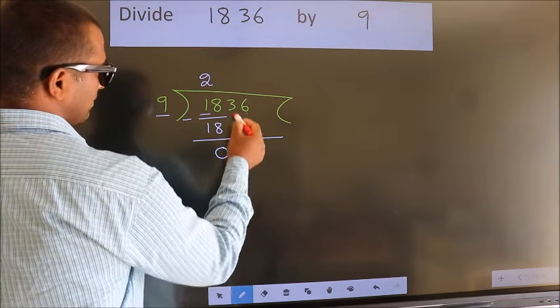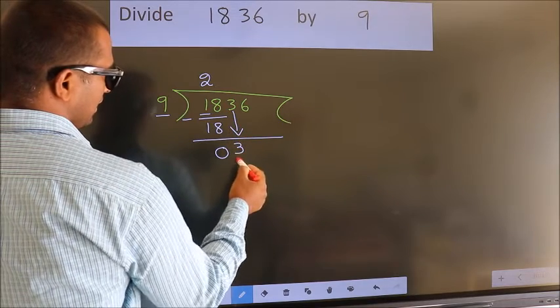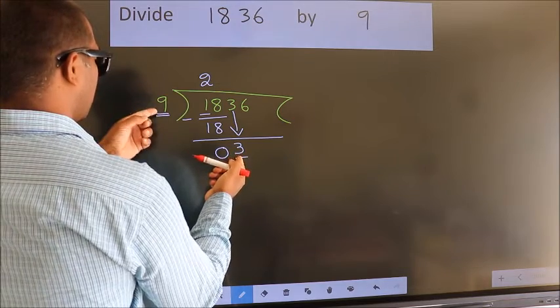After this, bring down the beside number. So 3 down. Here we have 3. Here 9. 3 smaller than 9.